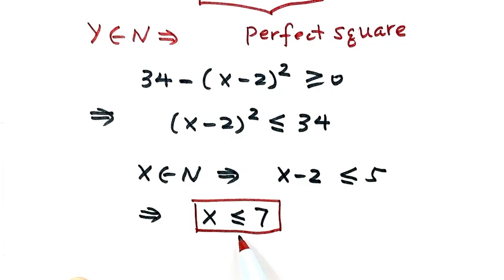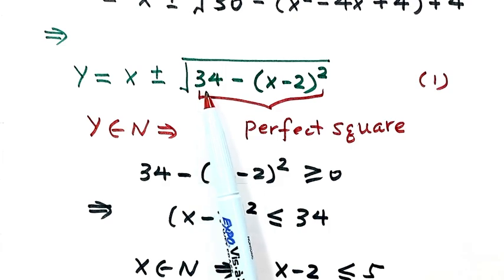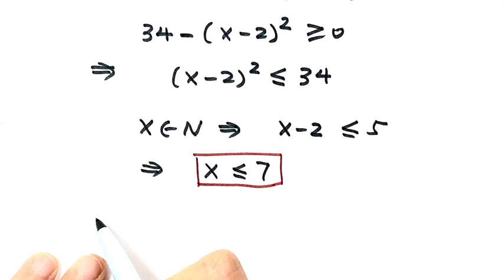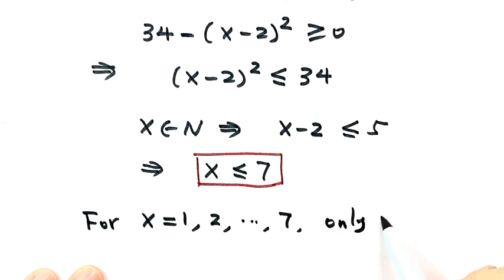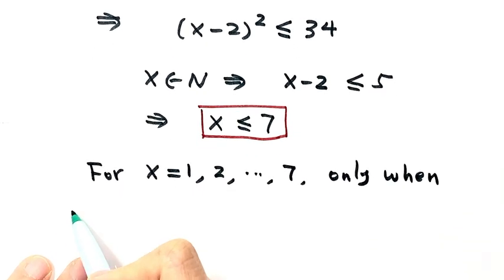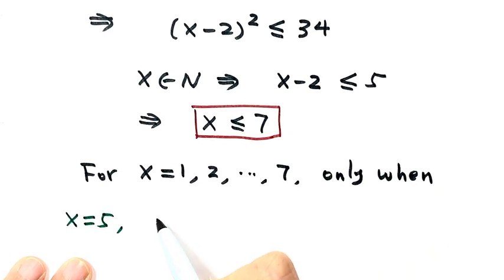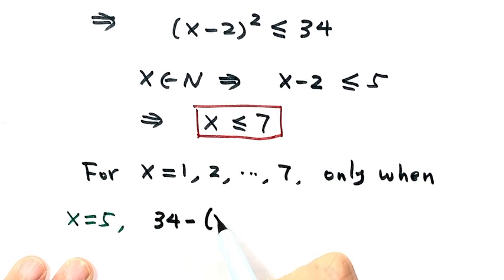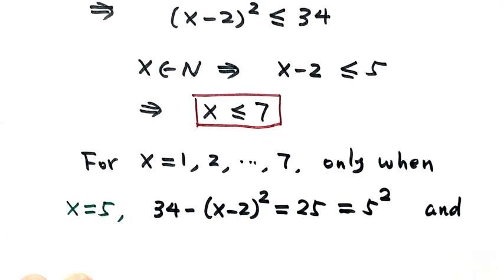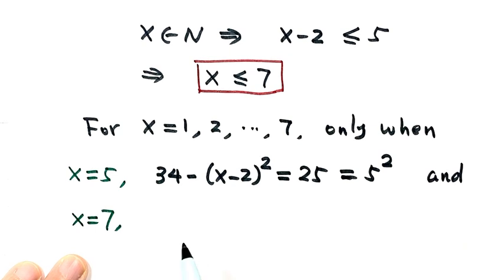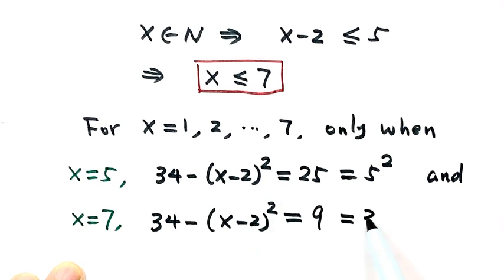Now let's check the values of x one by one — x = 1 through 7 — for which values the part under the square root is a perfect square. We find only two: when x = 5, then 34 − (5 − 2)² = 34 − 9 = 25, which is a perfect square. And when x = 7, then 34 − (7 − 2)² = 34 − 25 = 9 = 3², which is also a perfect square.